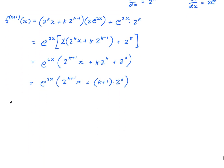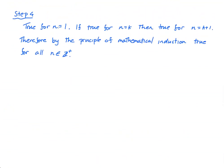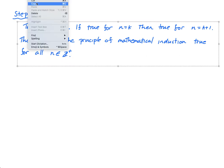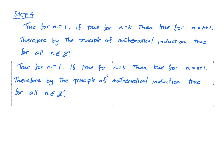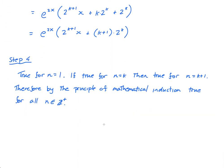That's it — but I'm not done yet. I have to write step 4. I'm going to go to my previous example and copy it, to show you it's literally the exact same thing. I don't need to change it for different types of proof by induction. True for n equals 1; if true for n equals k, then true for n equals k+1. Therefore, by the principle of mathematical induction, true for all n in the positive integers.